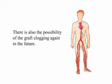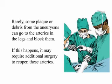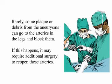There is also the possibility of the graft clogging again in the future. Hernias of the incision are possible — this happens when the internal wall of the abdomen is weak and intestines push under the skin, which may require another operation. Rarely, plaque or debris from the aneurysm can travel to the arteries in the legs and block them; if this happens it may require additional surgery to reopen these arteries.